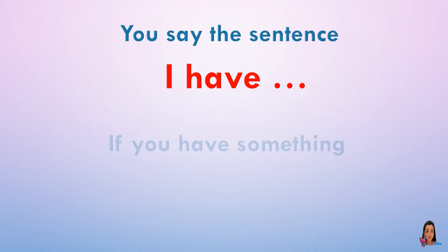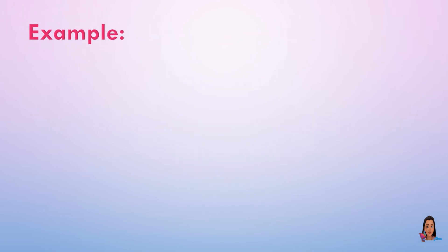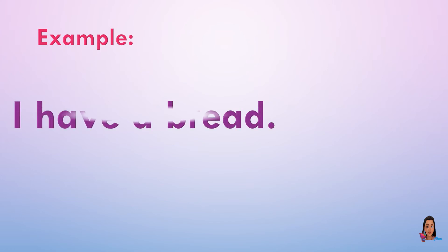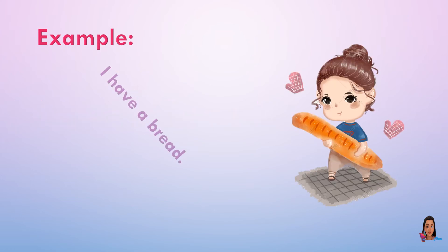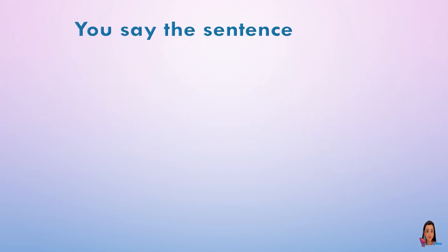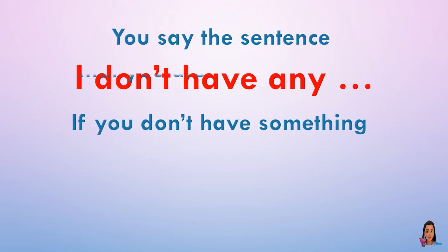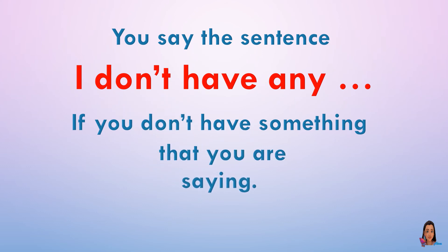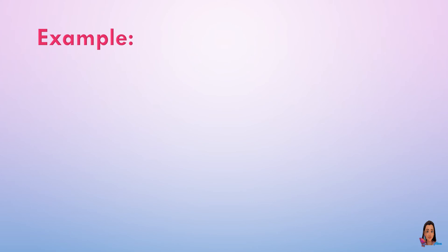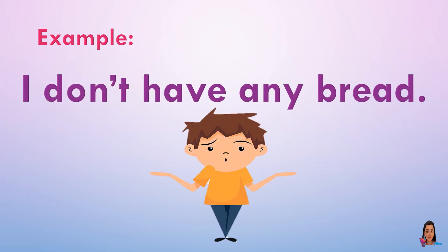You say the sentence "I have" if you have something that you are saying. You say the sentence "I don't have any" if you don't have something that you are saying. For example, I don't have any bread. The boy doesn't have any bread, so he will say: I don't have any bread.